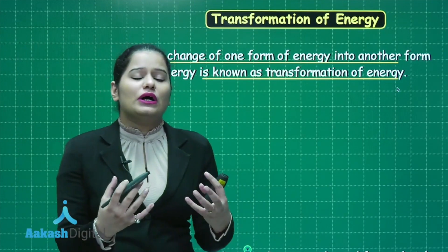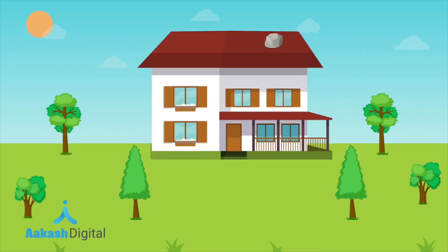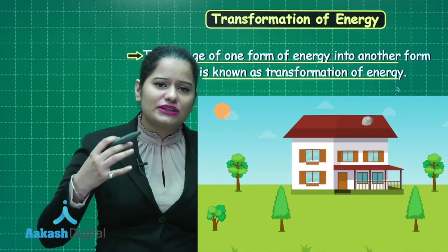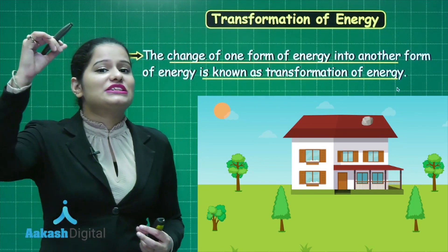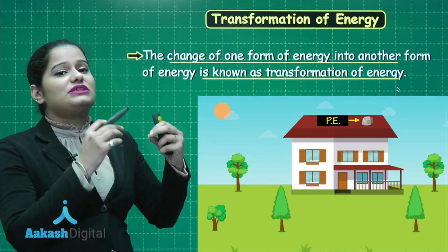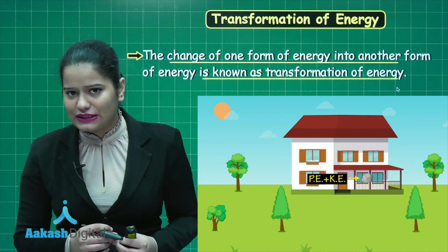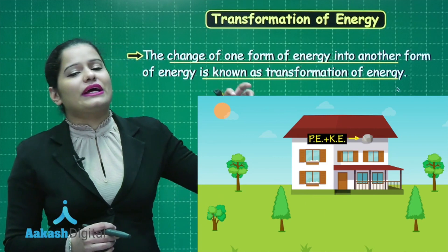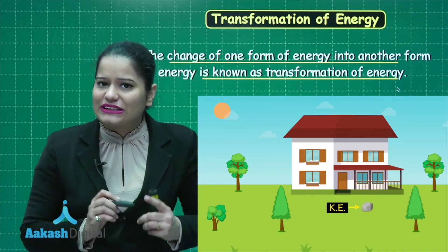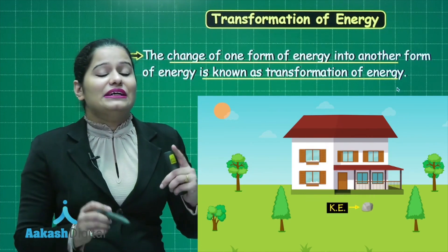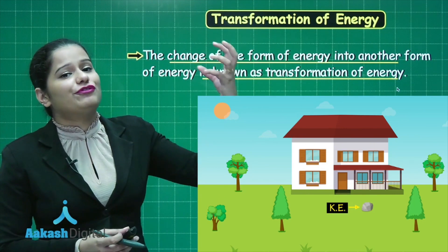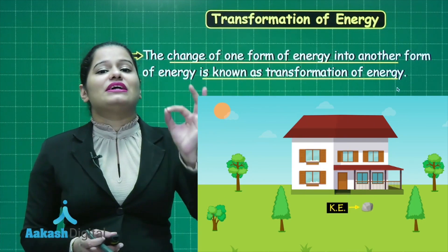Let's discuss a day-to-day life example. Suppose we have a stone lying on the roof of a house. What type of energy does that stone have? It is at some height from the ground, so it has potential energy. Now suppose this stone starts falling from that height. As it falls, its height from the ground continuously decreases, so its potential energy starts decreasing. But that doesn't mean the energy is simply lost.